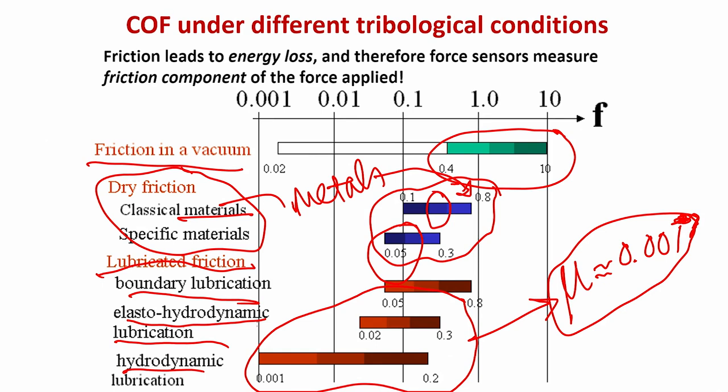When COF is 0.001, the asperities of the two mating solids are not coming into physical contact with each other — they are physically more or less separated, so these two solids behave essentially like frictionless surfaces.